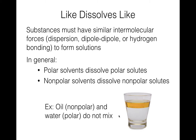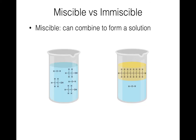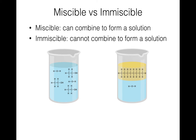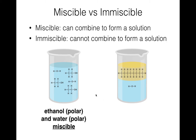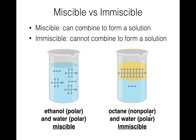There's a term for this: miscible or immiscible. Miscible means that the substances can combine to form a solution — this applies when we have two liquids that we want to combine. Immiscible means they cannot combine to form a solution. For example, ethanol and water are both polar, so they would be miscible. On the other hand, octane is very nonpolar and water is polar, so they would be immiscible — another oil and water situation. Miscible is like mixable, immiscible is not mixable. That applies to liquids.